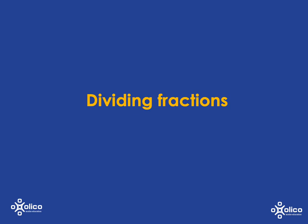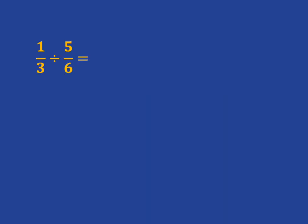Dividing fractions is as easy as multiplying fractions, it just has one extra step to it. If we want to do one-third divided by five-sixths, the way we do it is as follows.